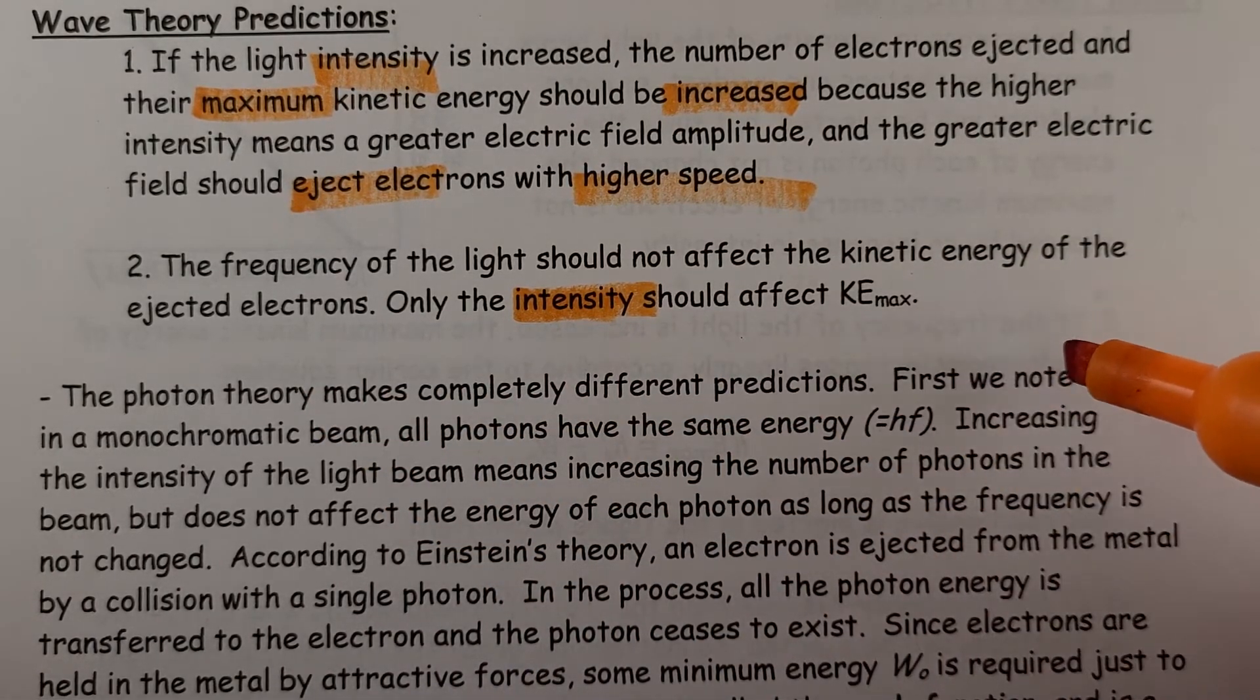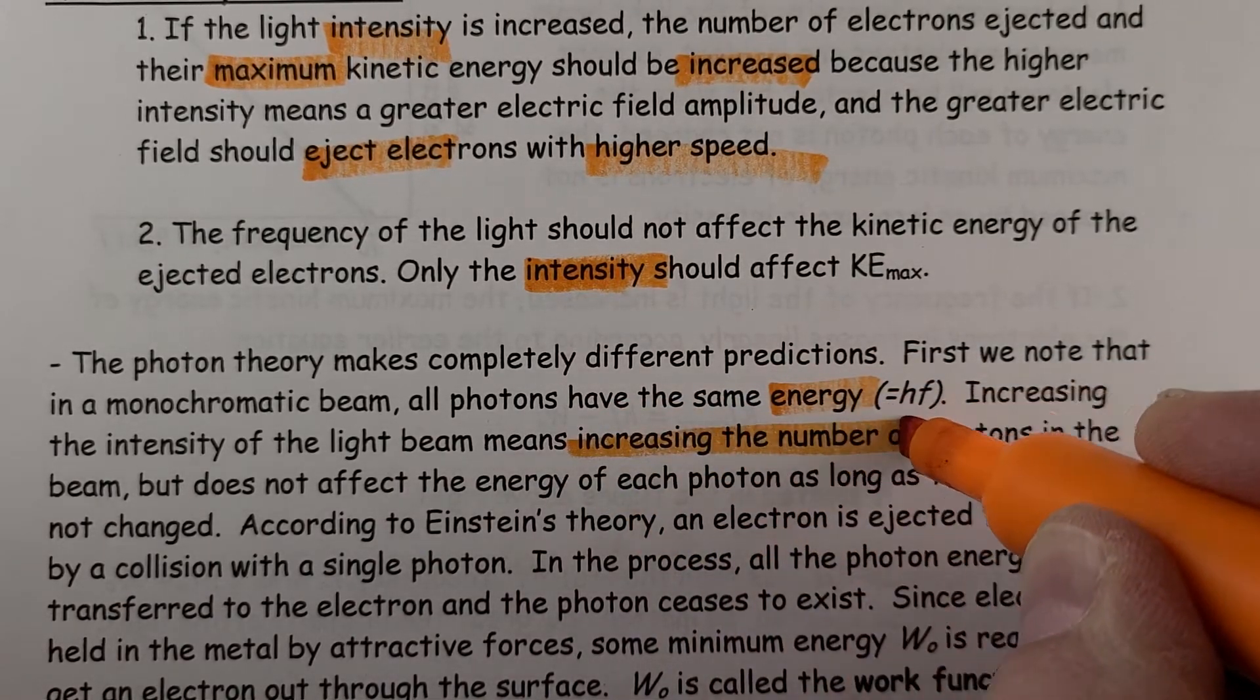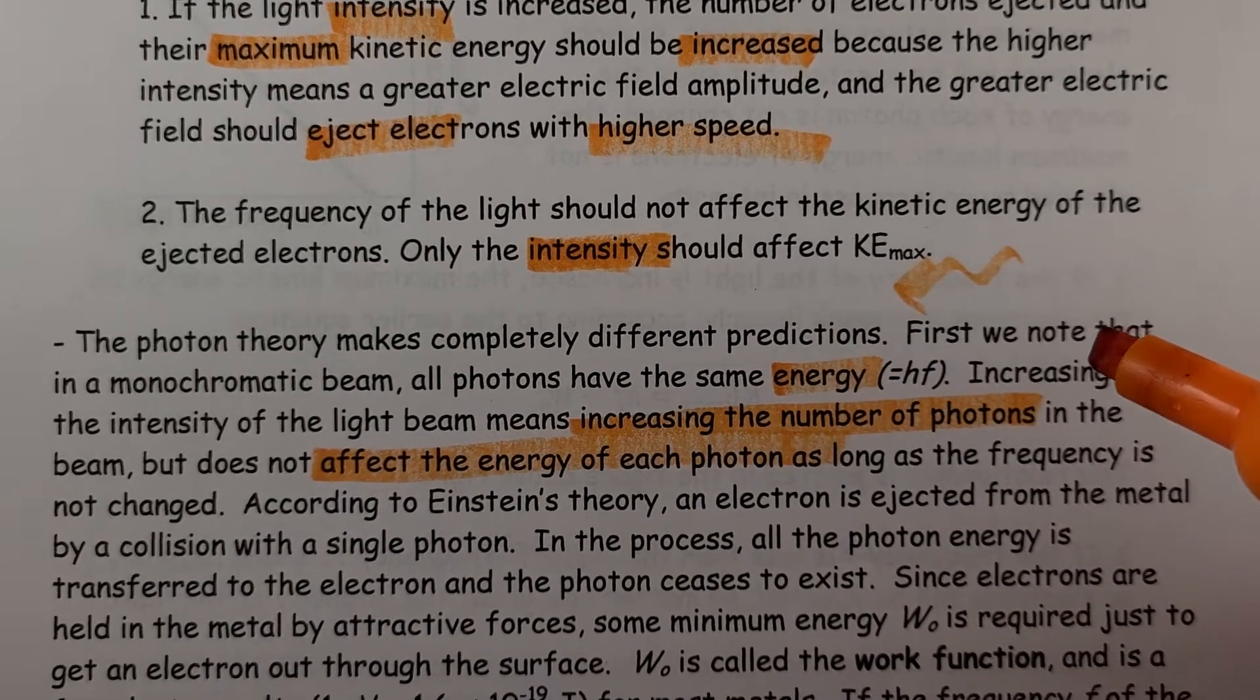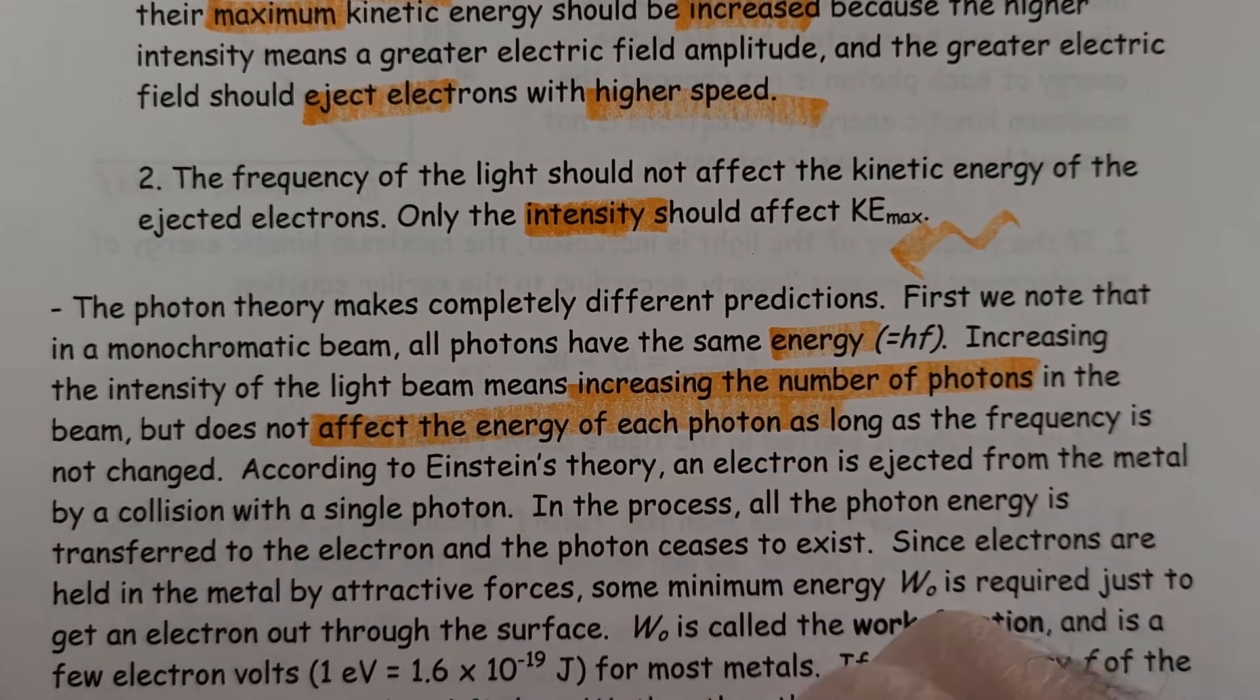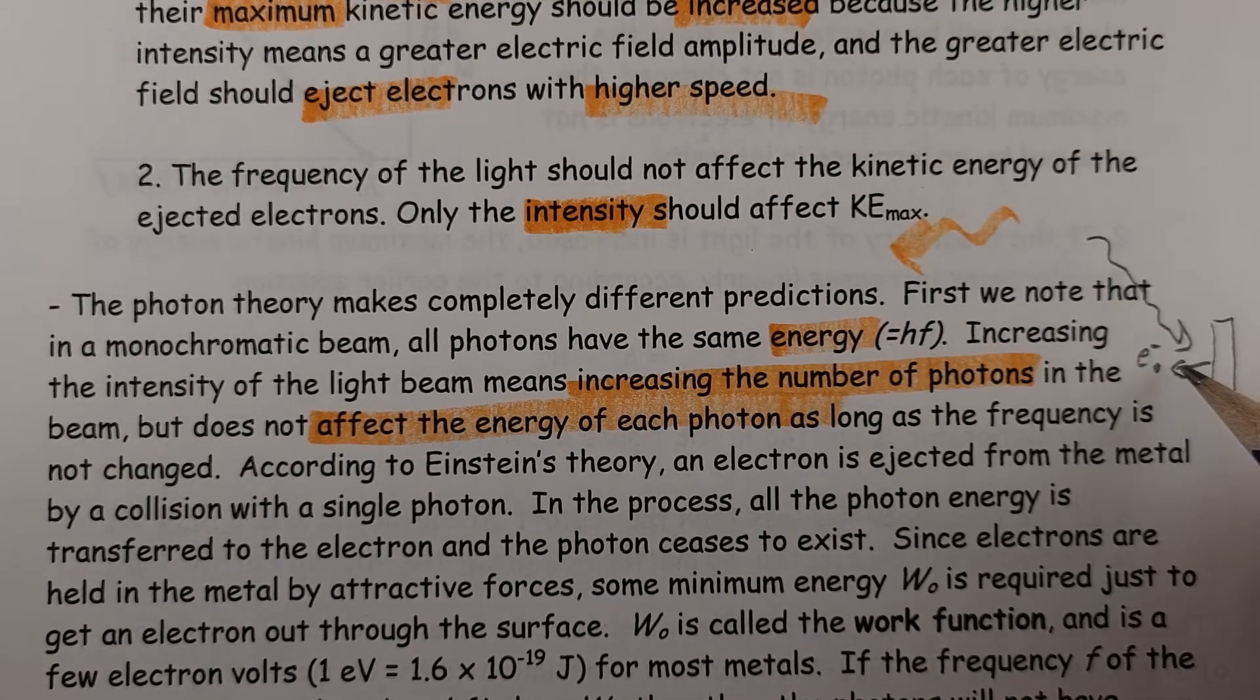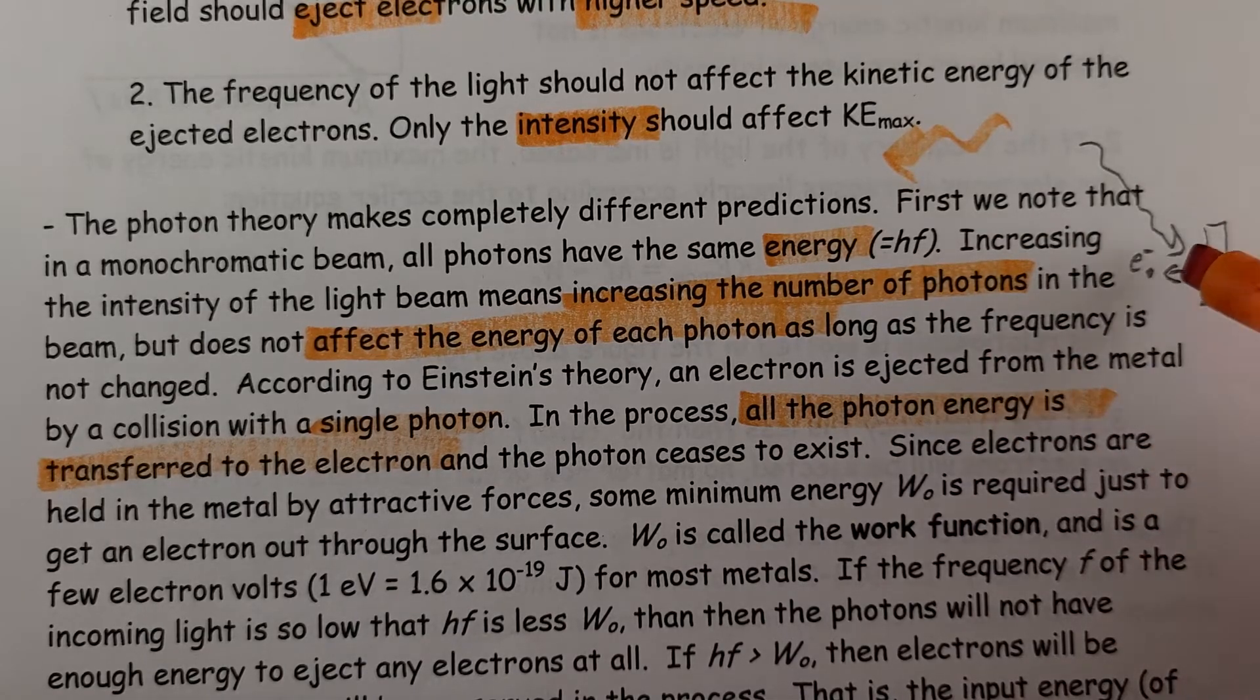The photon theory makes completely different predictions. First, we note that in a monochromatic beam, all photons have the same energy. So the energy is dependent upon that frequency, and that's different already. Increasing the intensity of light just simply means increasing the number of photons, but not affecting the energy of each photon. So the intensity just determines how many photons are released, but not their energy, as long as frequency hasn't changed. According to Einstein's theory, an electron is ejected from material by collision with a single photon. So the idea here is that if I have my metal plate right here, and if I have my photon, and it bounces out an electron, the energy that that photon had goes directly to that electron. So the electron is ejected by interacting with a single photon. In the process, all of the photon's energy is transferred to the electron, and the photon ceases to exist because all that energy is in that electron.